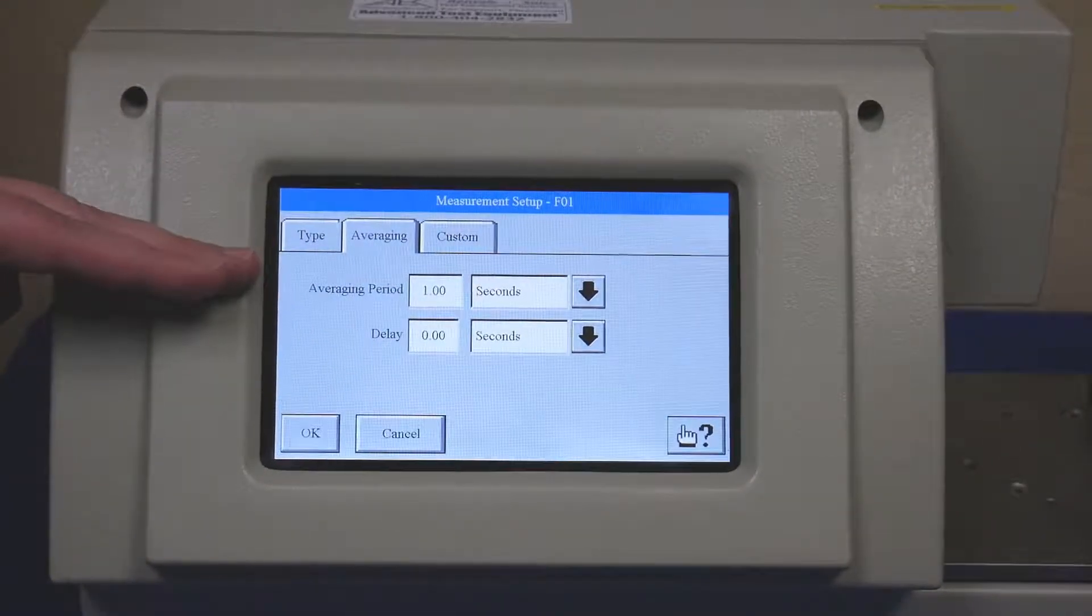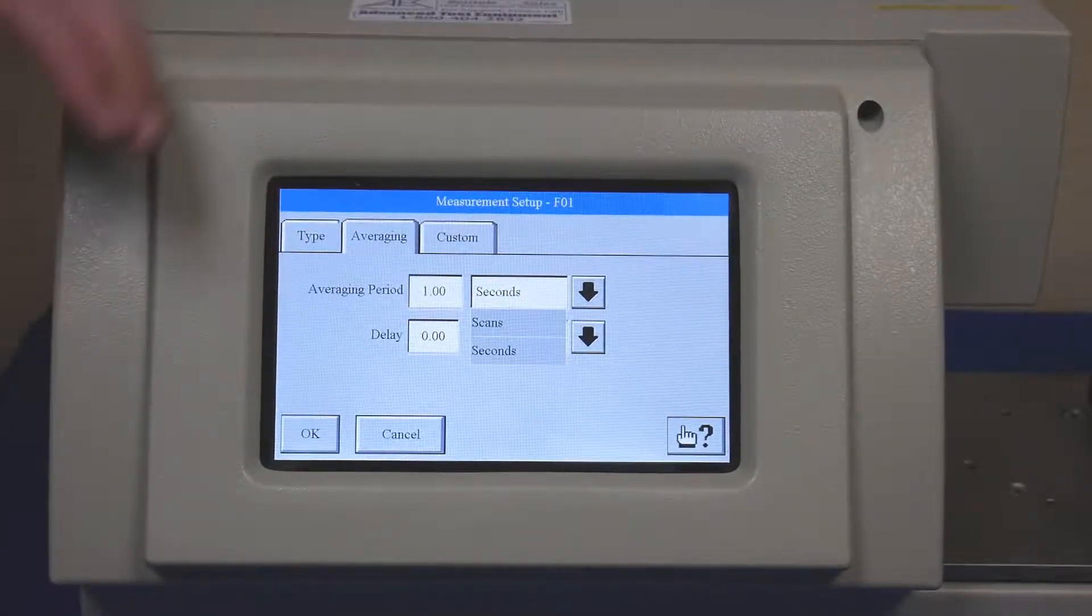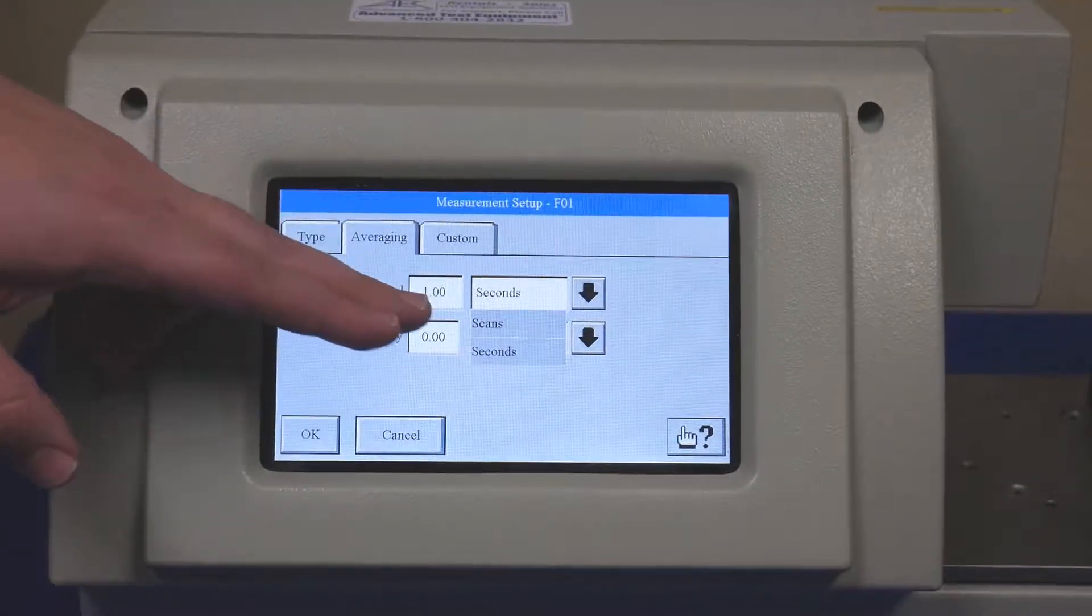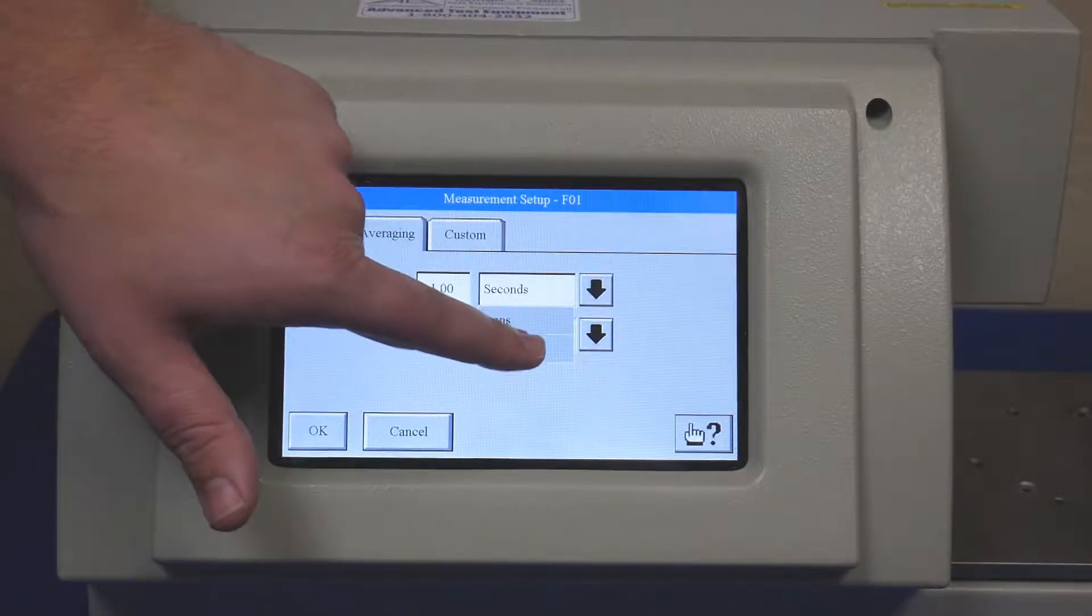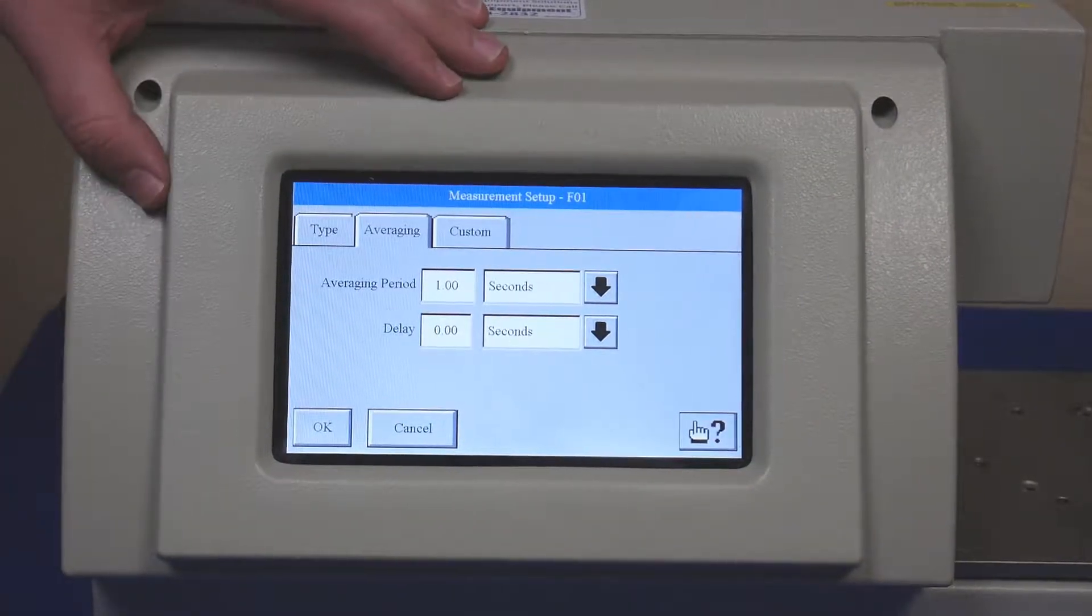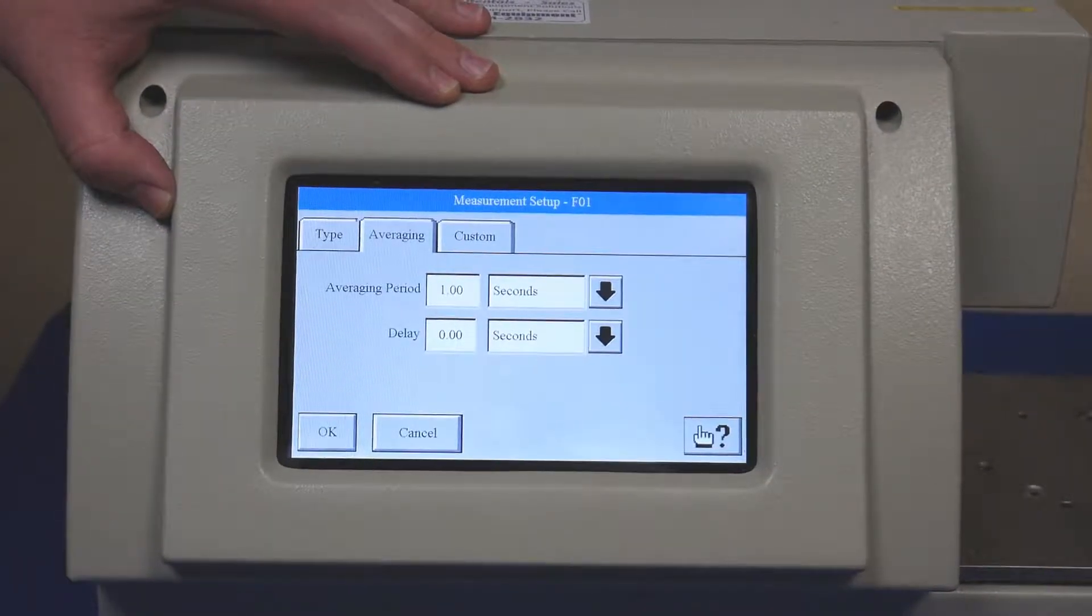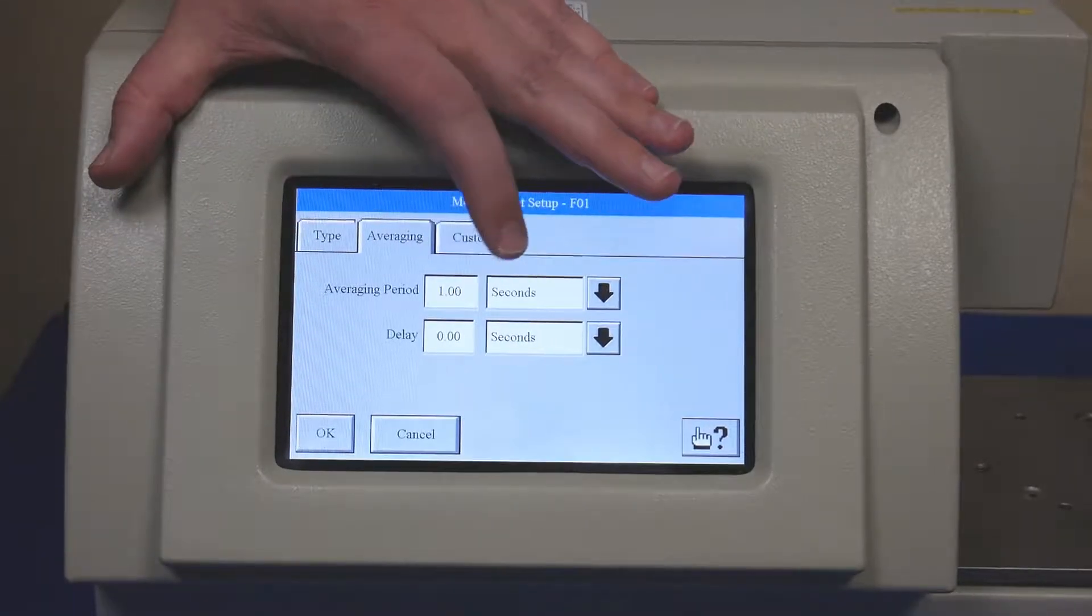The part to pay attention to is the top portion, the averaging period. You're going to have two different menu buttons: you're going to have scans or seconds. We want seconds. Seconds almost always will allow you to easily manipulate the data to have less data points outputting rather than more data points inputting, which would increase your buffer, which would decrease your buffering time.